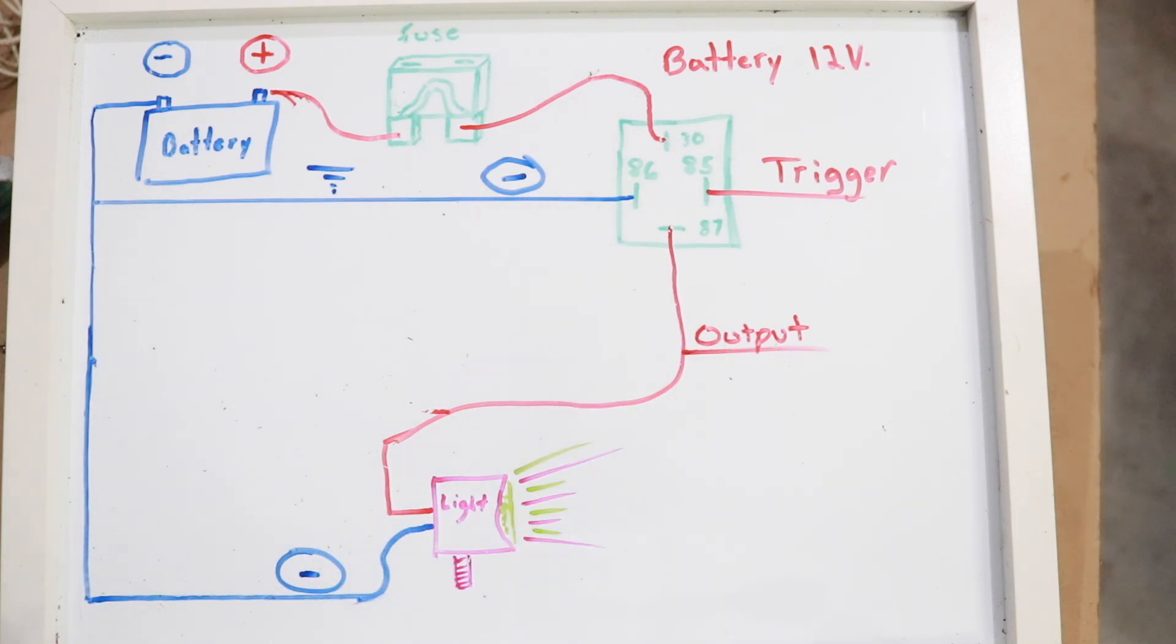87 is our output line. That will go to our off-road light, windshield wiper motor, or whatever component you're trying to power. And of course, you would have to ground your component as well.